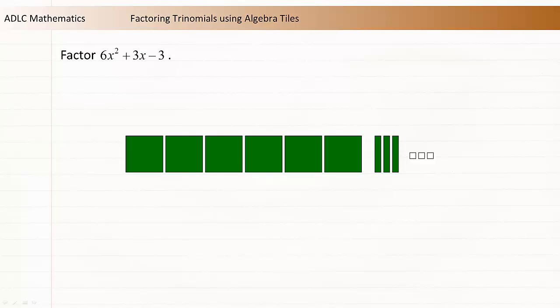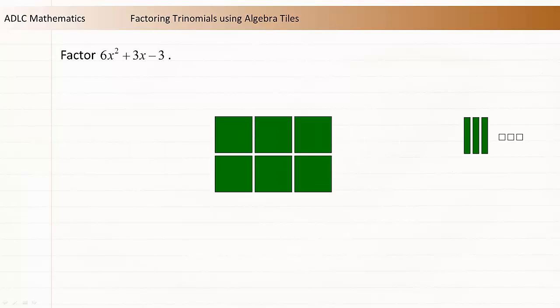Let's start over. This time, let's use a 2 by 3 rectangle of x² tiles. Move the negative 1's to the bottom right corner. Now use the x tiles to complete the rectangle. This doesn't look good either.